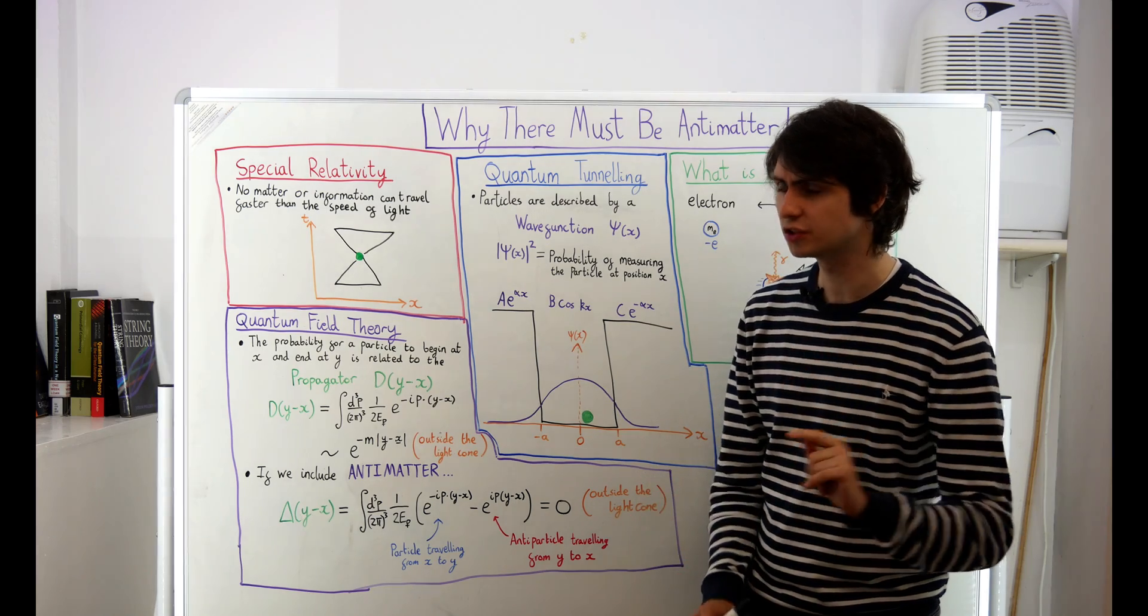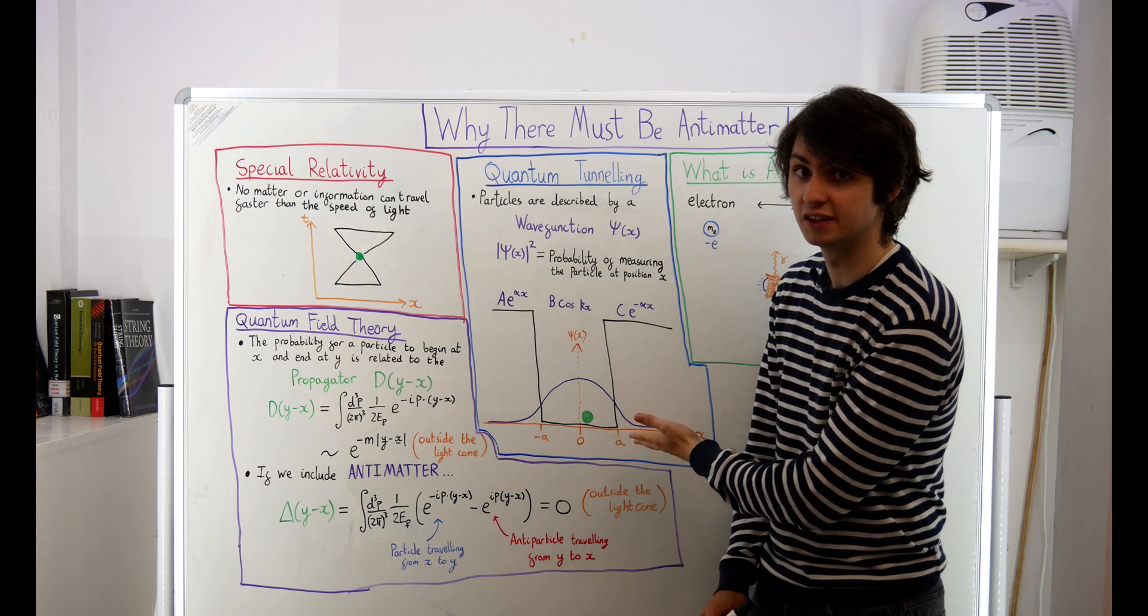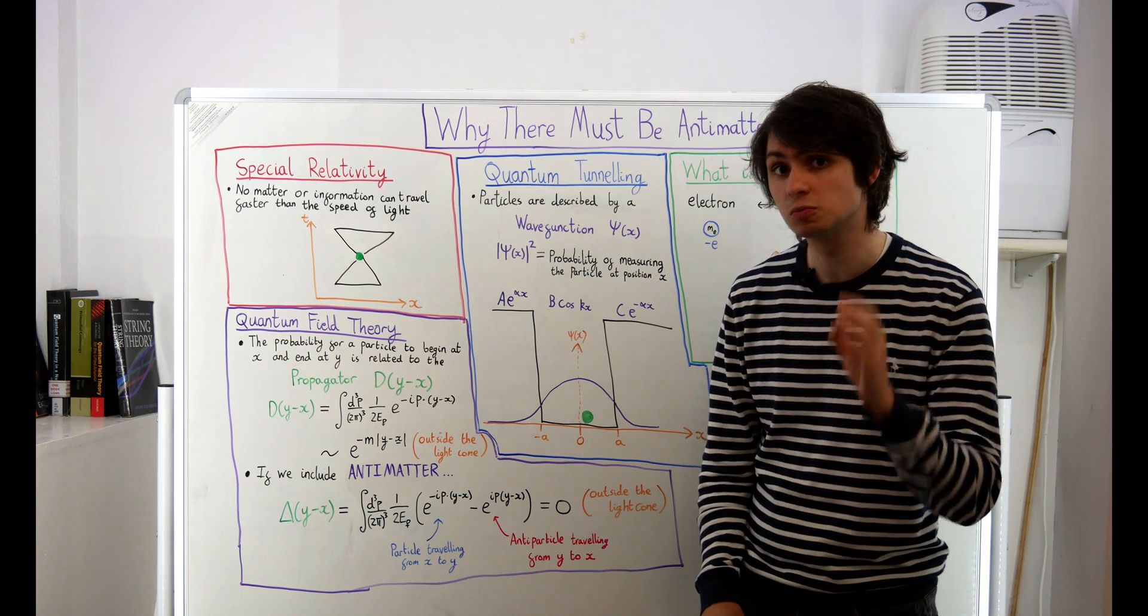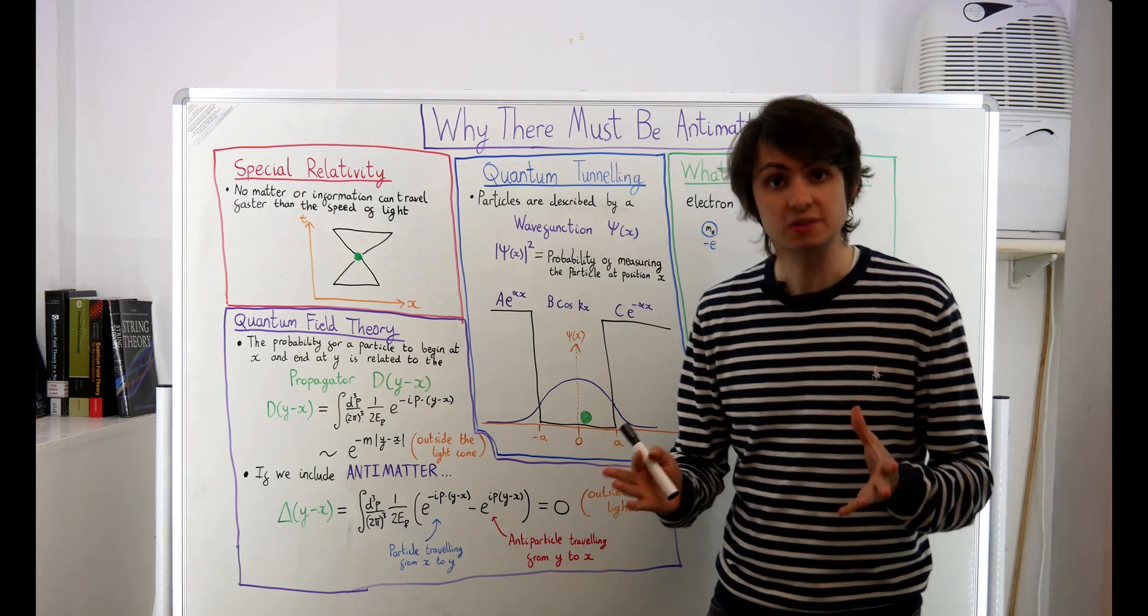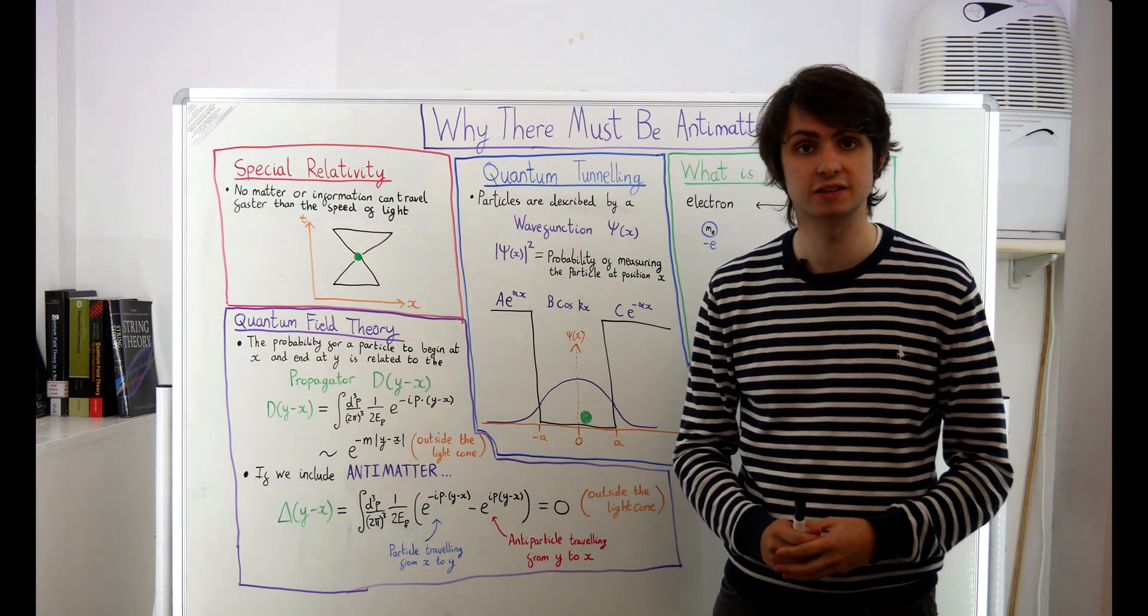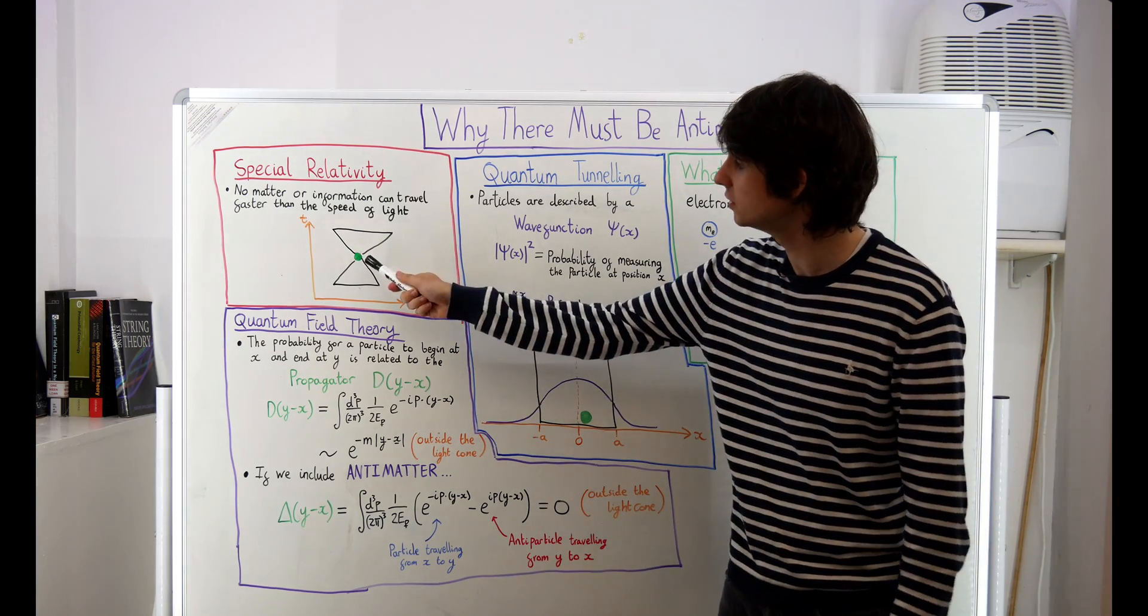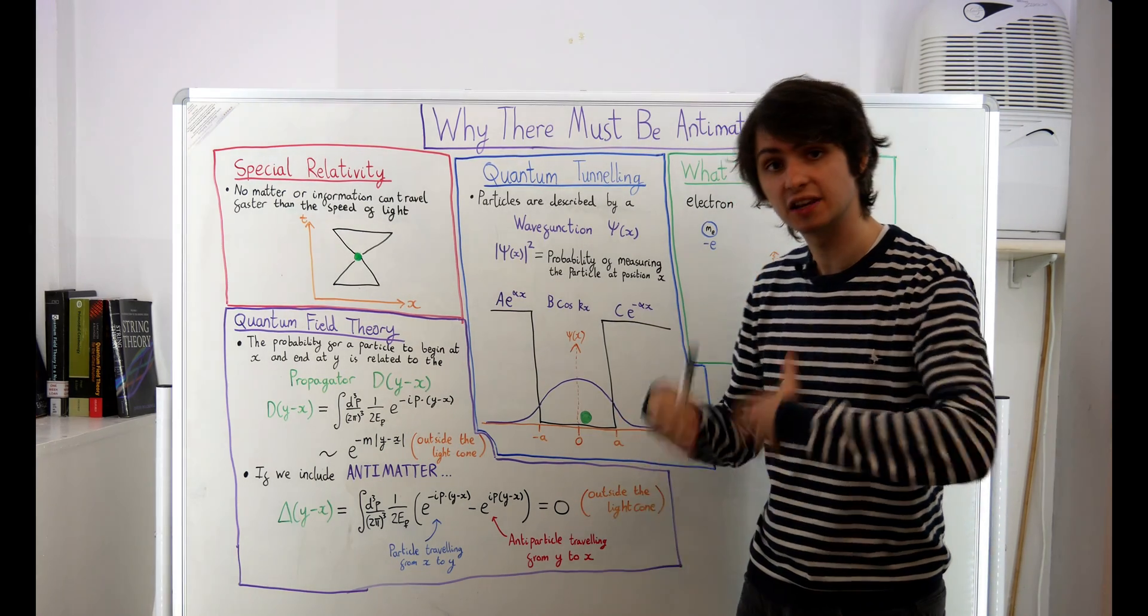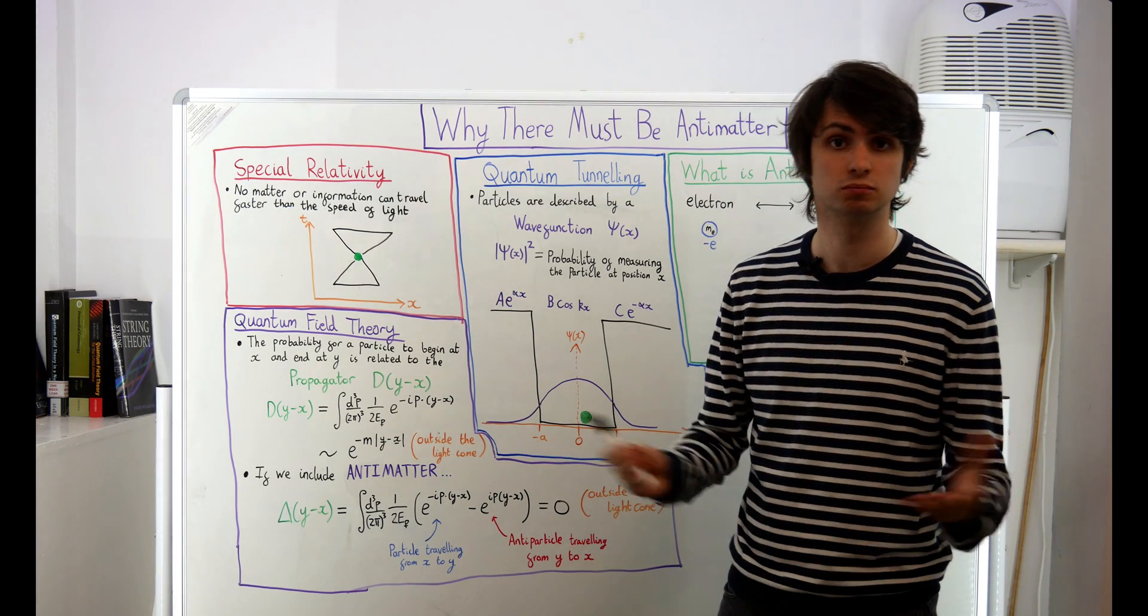But hang on, we just saw in quantum mechanics that quantum particles don't obey forbidden signs. Even if a region is classically forbidden, a quantum particle has a small probability of tunneling and finding itself there anyway. It seems then that we found a big problem with combining quantum mechanics and special relativity. In special relativity you cannot find a particle outside of its light cone. But in quantum mechanics a particle has a small probability of tunneling into a forbidden region. Which is right?